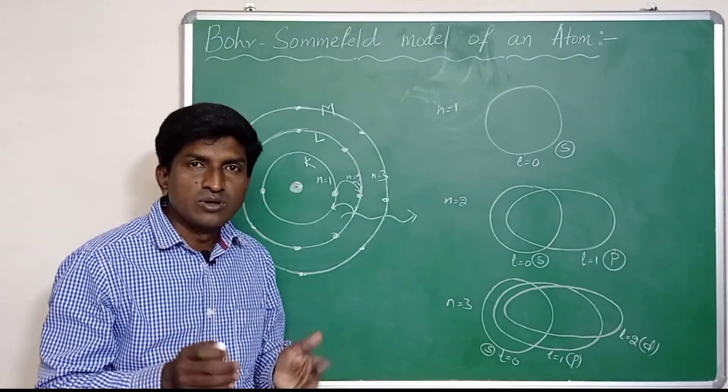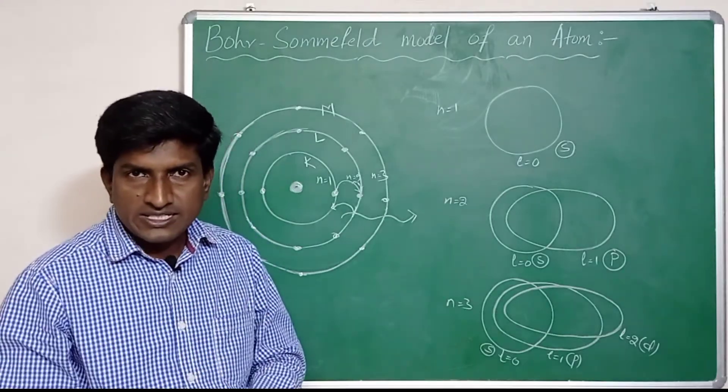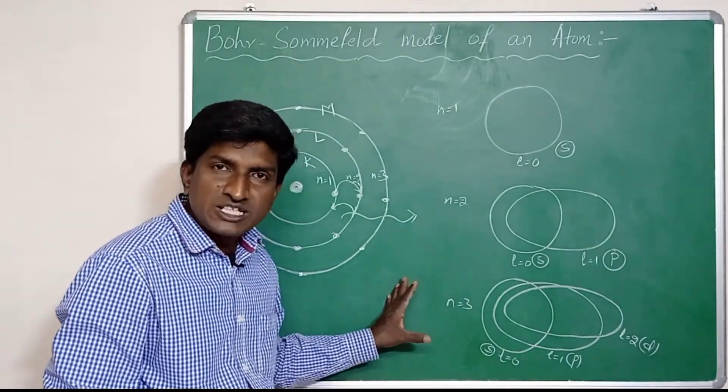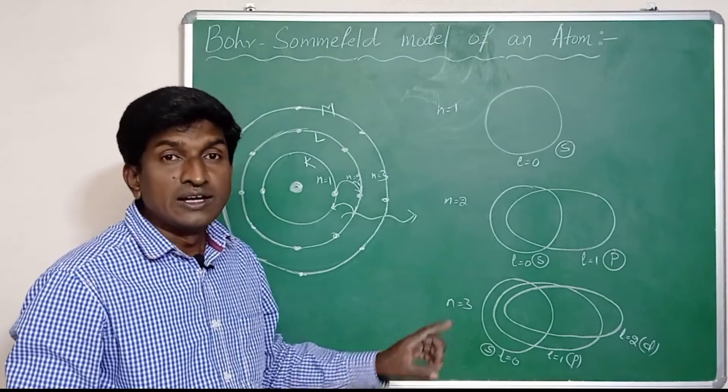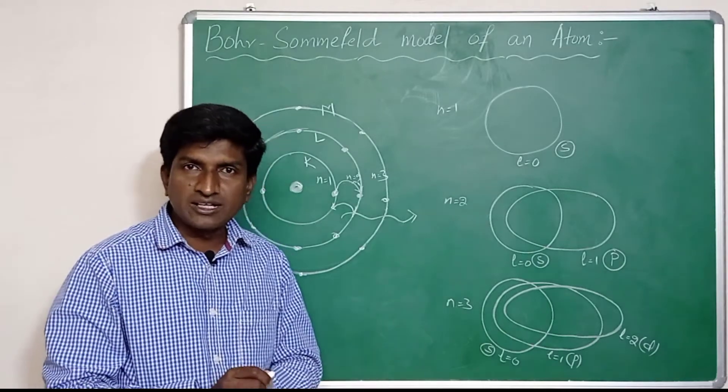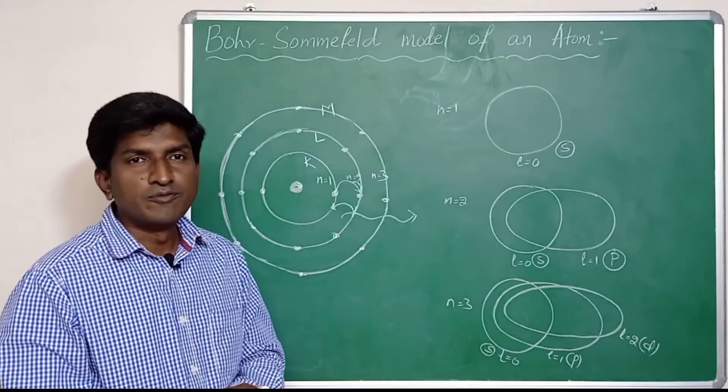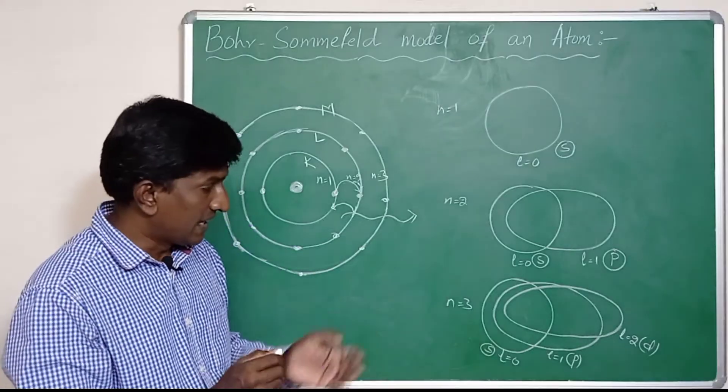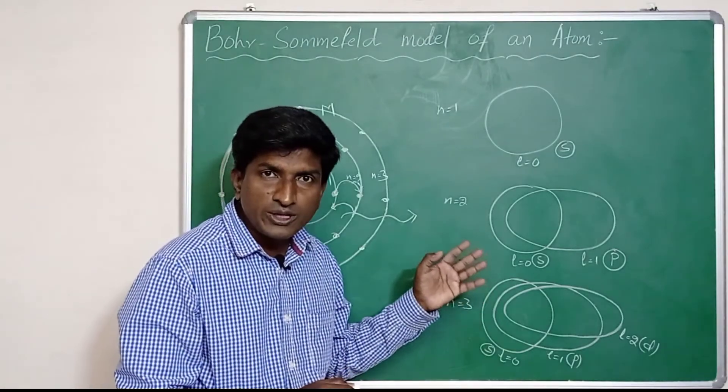In this way, Sommerfeld tried to explain this fine spectra. The nucleus of the atom lies on the principal focus side of elliptical orbits, and the electrons revolve around the nucleus in periodic motion under the influence of this nucleus.